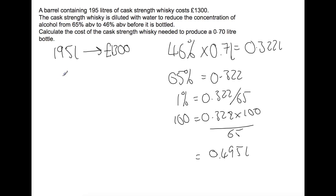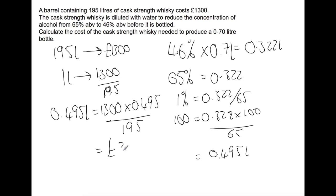So now we can go back to this original relationship. So if we go back down to one liter, you would have £1300 divided by 195, and then we're going to multiply that to the volume that we require. And that would cost you £3.30 to get that volume of cask strength whiskey, which you would then dilute to the 0.7 liters.